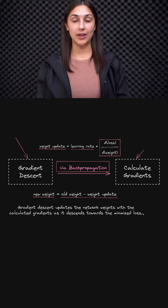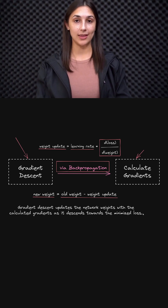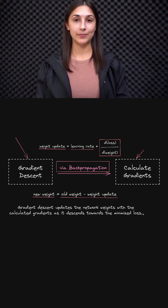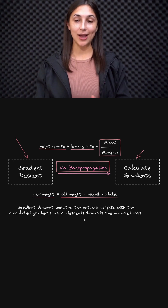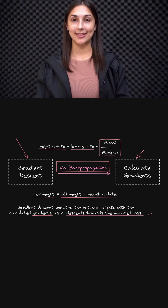This entire process of using gradient descent to calculate the gradients of the loss with respect to the weights in the network, and then updating all of the weights, happens over and over again in an iterative fashion until all of the optimized values for the weights have been found, which leads to ultimately the minimized network loss. We can see where gradient descent gets its name — it's updating the weights with the calculated gradients of the loss function as it descends towards the minimized loss. So there we have gradient descent.